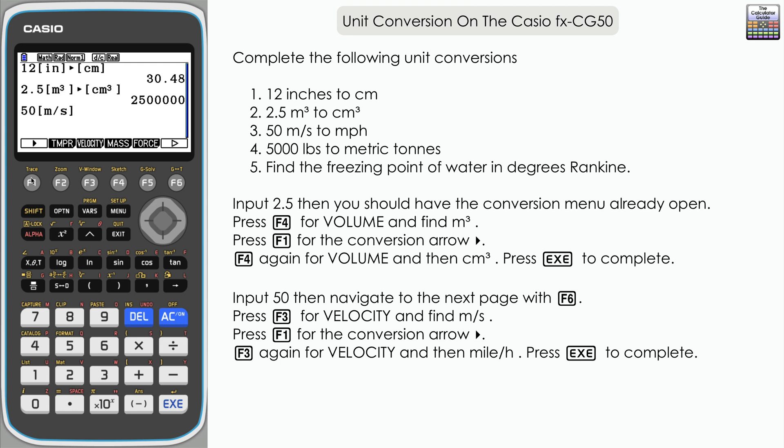If you have seen the previous video using the Casio ClassWiz, remember we had to do two conversions in one, a chain, because there was only kilometers per hour available to us. However we are able to choose miles per hour on this, making it a little bit more convenient. So conversion arrow and then down to five, miles per hour. We can just press five if you prefer. Execute and here we have the velocity in miles per hour: 111.8 and so on.